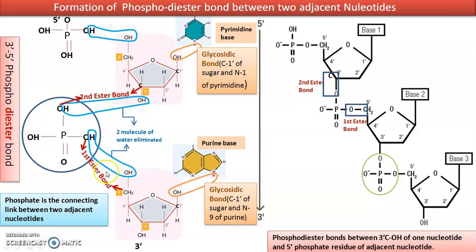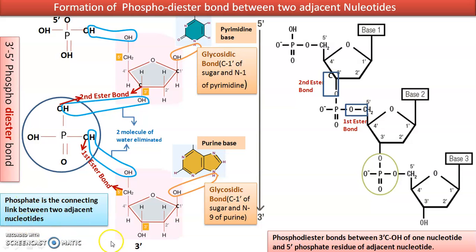Now, this is the next nucleotide — pentosugar, purine, and the phosphate group. We are going to talk about how these two nucleotides are linked, that is how the chain extends, always from 5' to 3' direction. The bond occurs between the third carbon of the first sugar and the fifth carbon of the next sugar through a phosphate group. That means phosphate is the connecting link between two adjacent nucleotides as the chain grows.